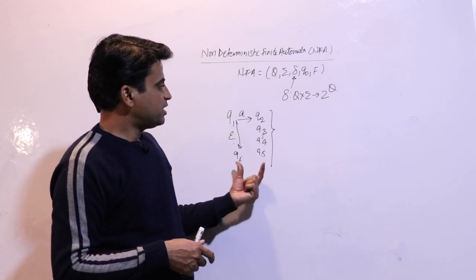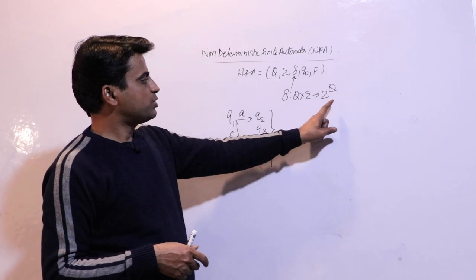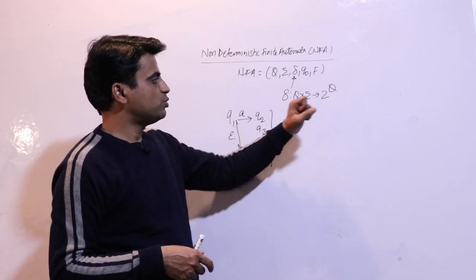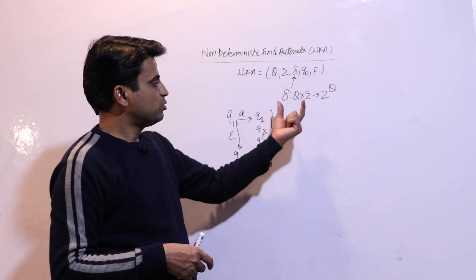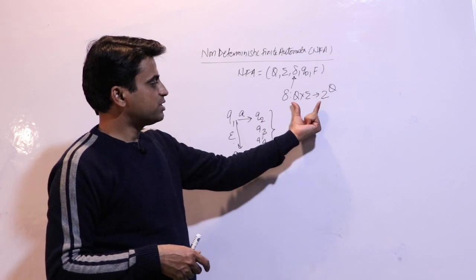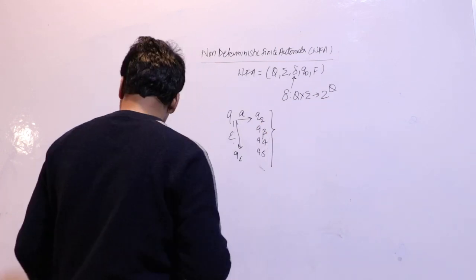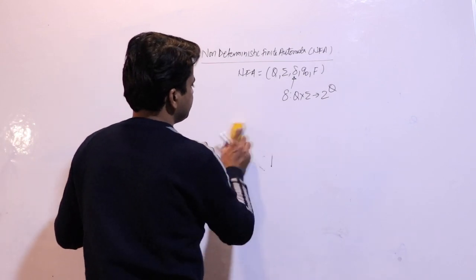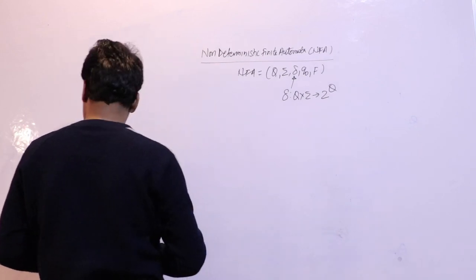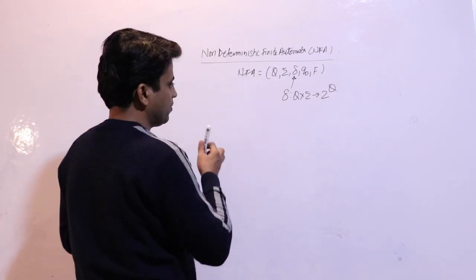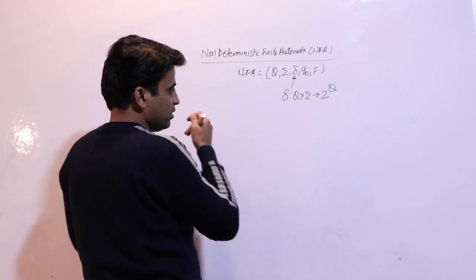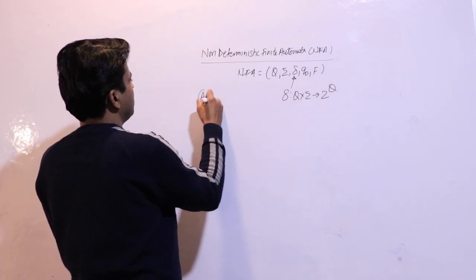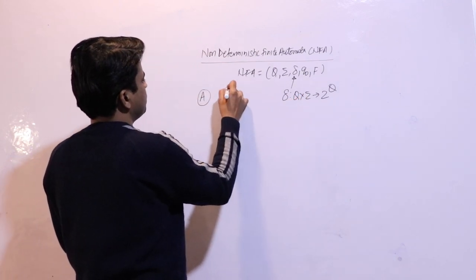To represent this, what do we use? The mapping function: Q cross sigma implies 2 to the power Q. So what does it mean? Let me draw it to explain.